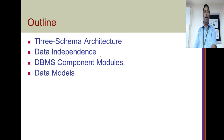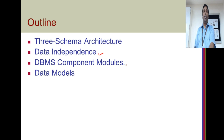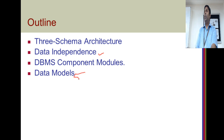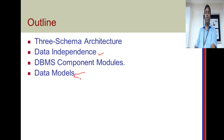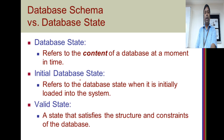We will discuss the three schema architecture, data independence, and models inside a database management system. Regarding data models, we will look at the difference between hierarchical, network, and object-relational models. So, we will look at some definitions.